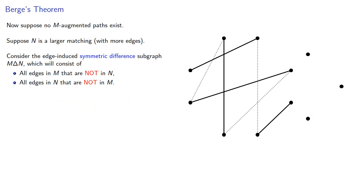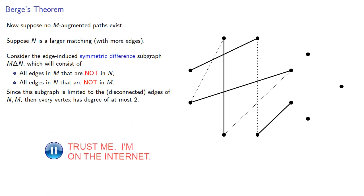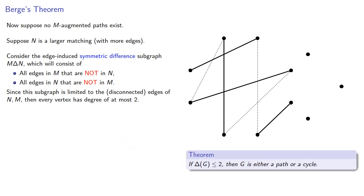Since this subgraph is limited to the originally disconnected edges of N and M, then every vertex has degree at most 2. However, there's a theorem that if the maximum degree of any vertex in the graph is less than or equal to 2, then our graph consists of either a path or a cycle. Consequently, every connected component of this edge-induced symmetric difference is either a path or a cycle.